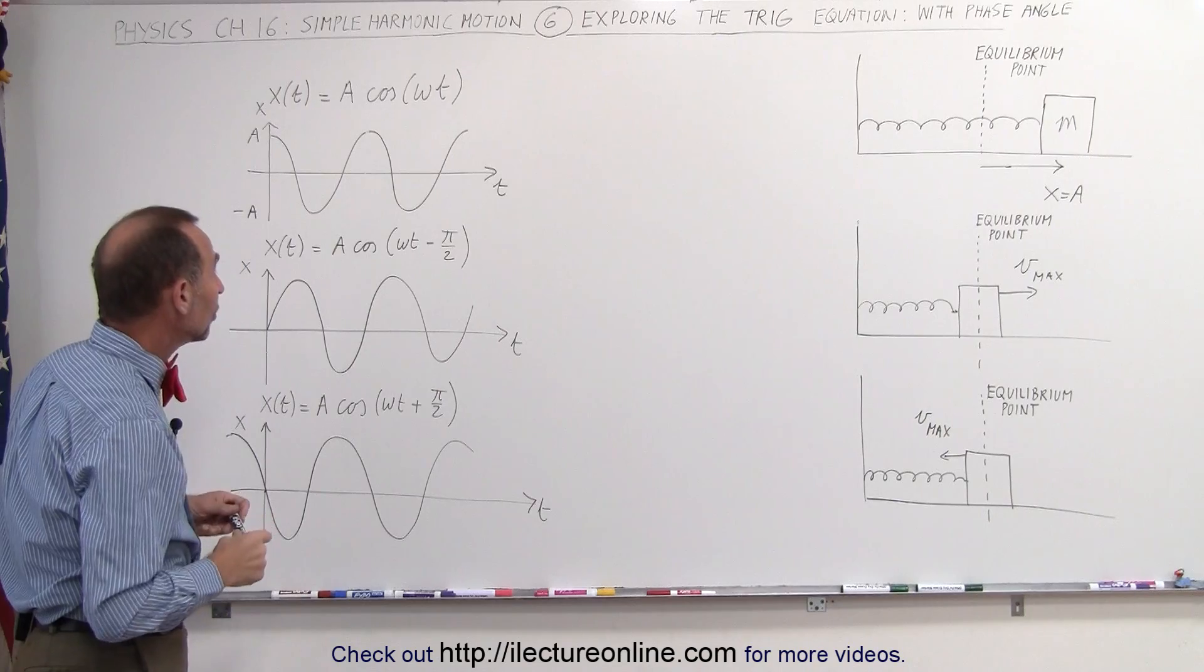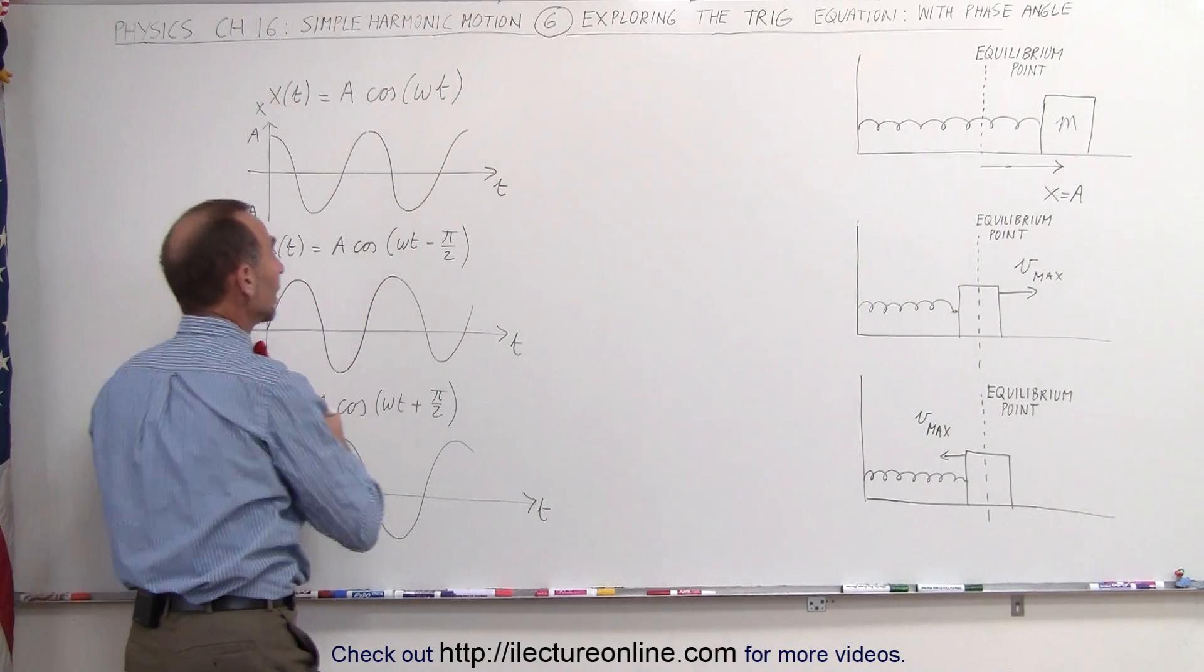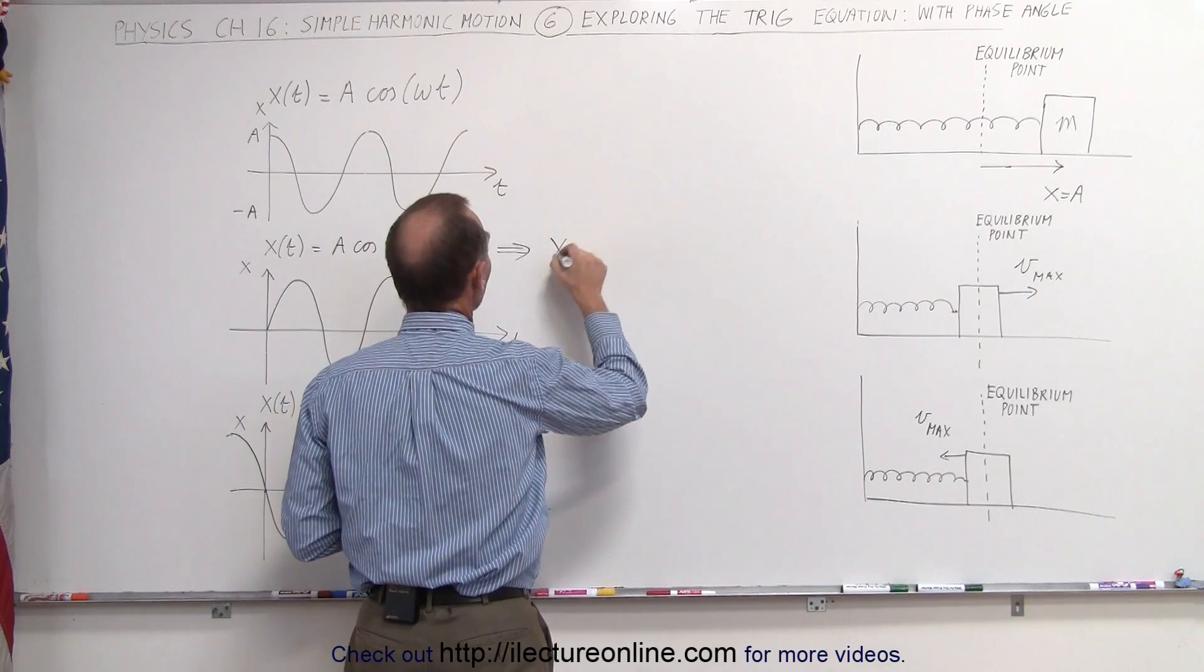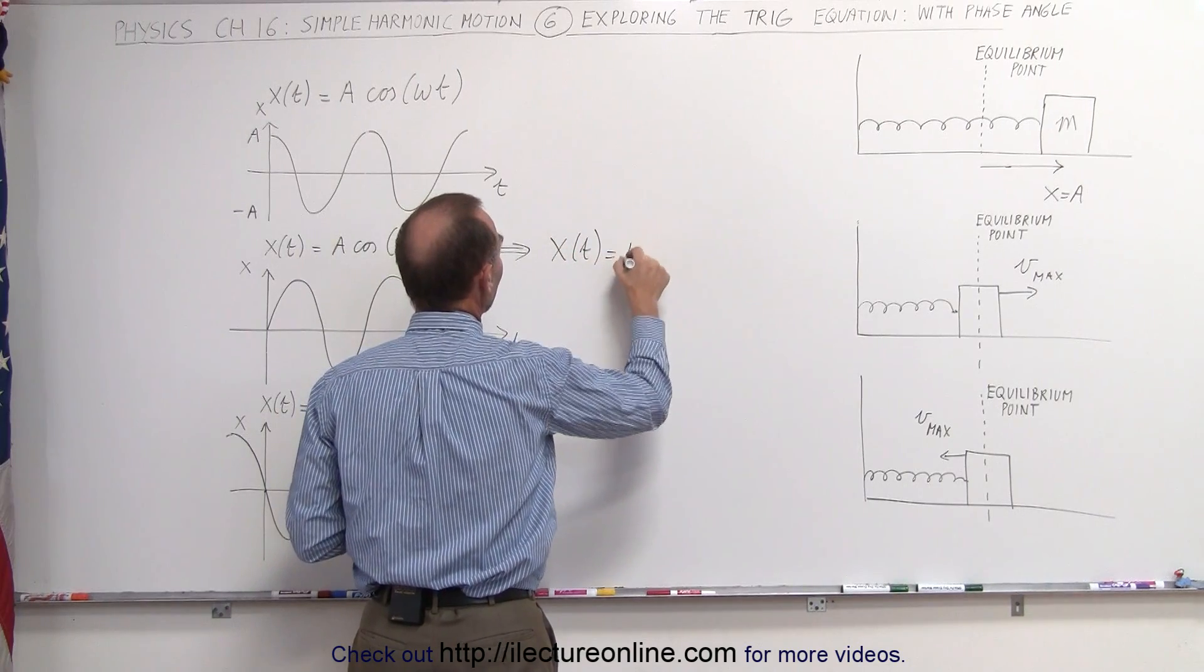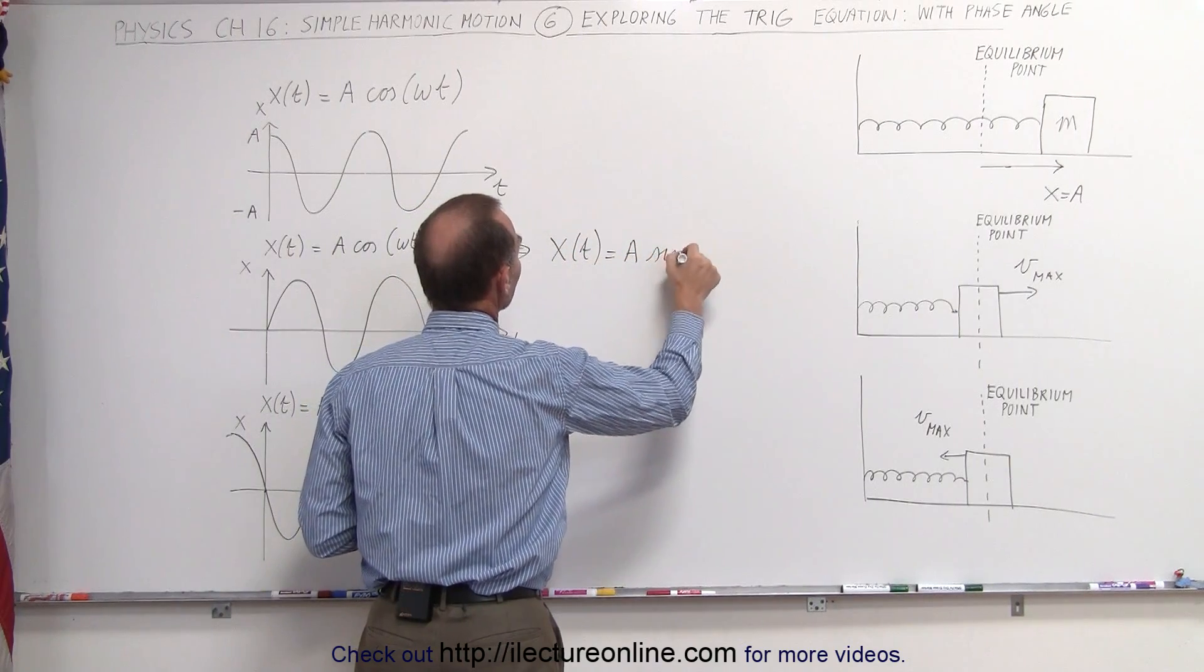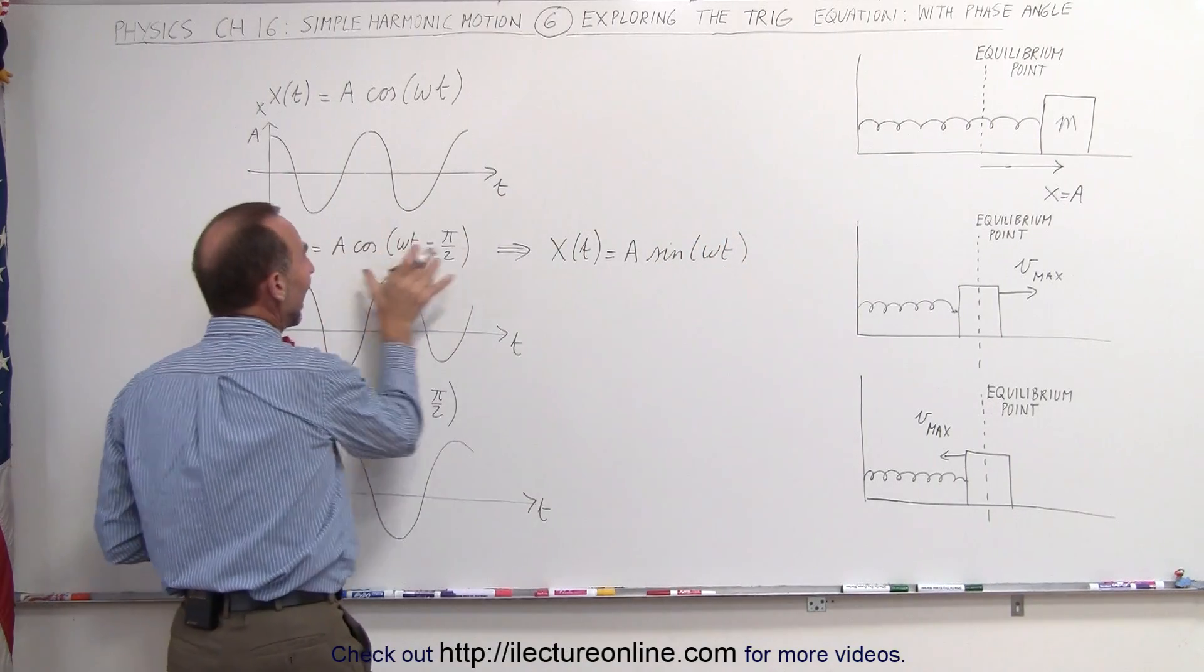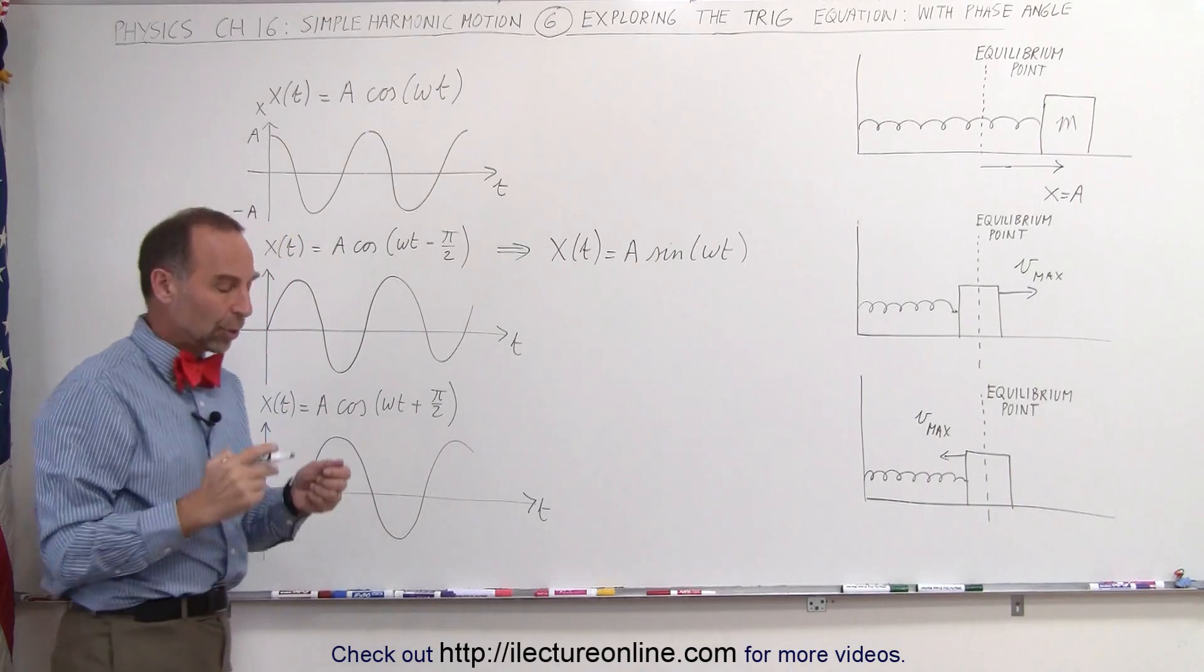One more thing noteworthy to mention, this equation right here could actually be rewritten in the following format. We can write x as a function of time is equal to the amplitude, times the sine of omega t without a phase angle. This and this is exactly the same equation.